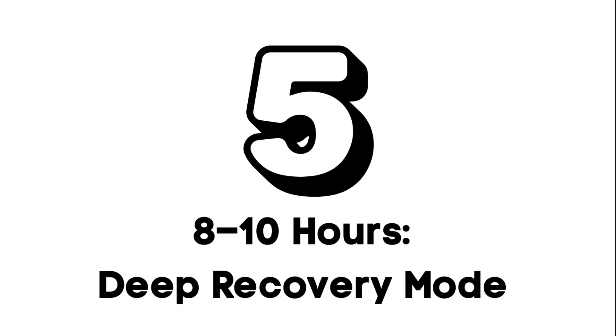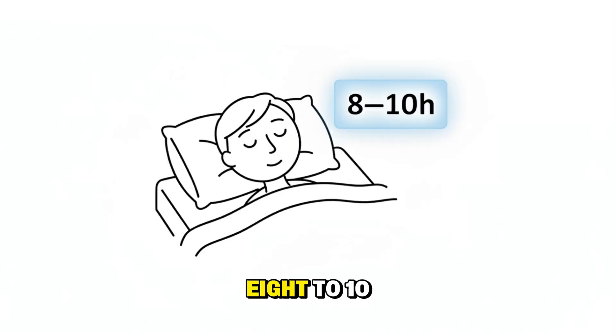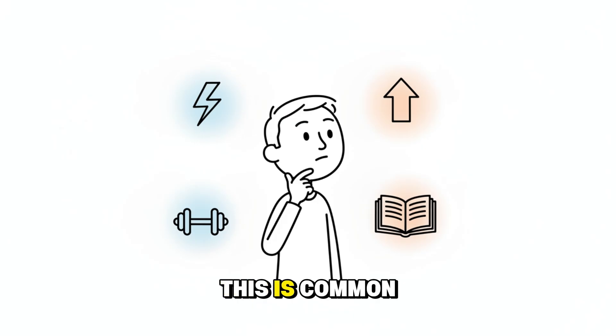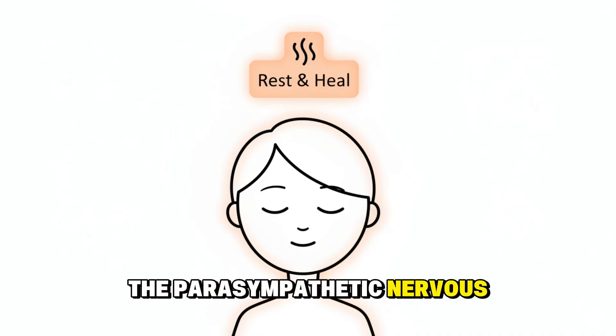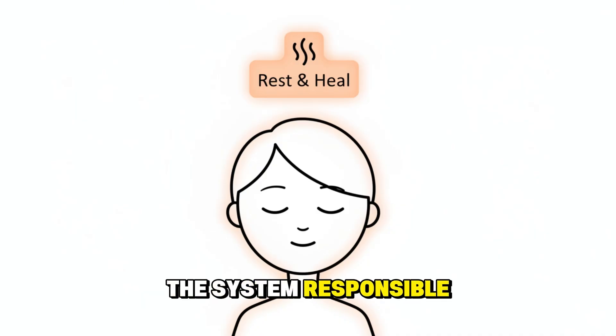Fifth, eight to ten hours. Deep recovery mode. Eight to ten hours of sleep signals that your body and mind are entering a deeper level of recovery. This is common during periods of growth, learning, stress, or physical exertion. Growth hormone increases significantly, helping the body repair tissue and support long-term health. The parasympathetic nervous system, the system responsible for rest and healing, becomes more active.